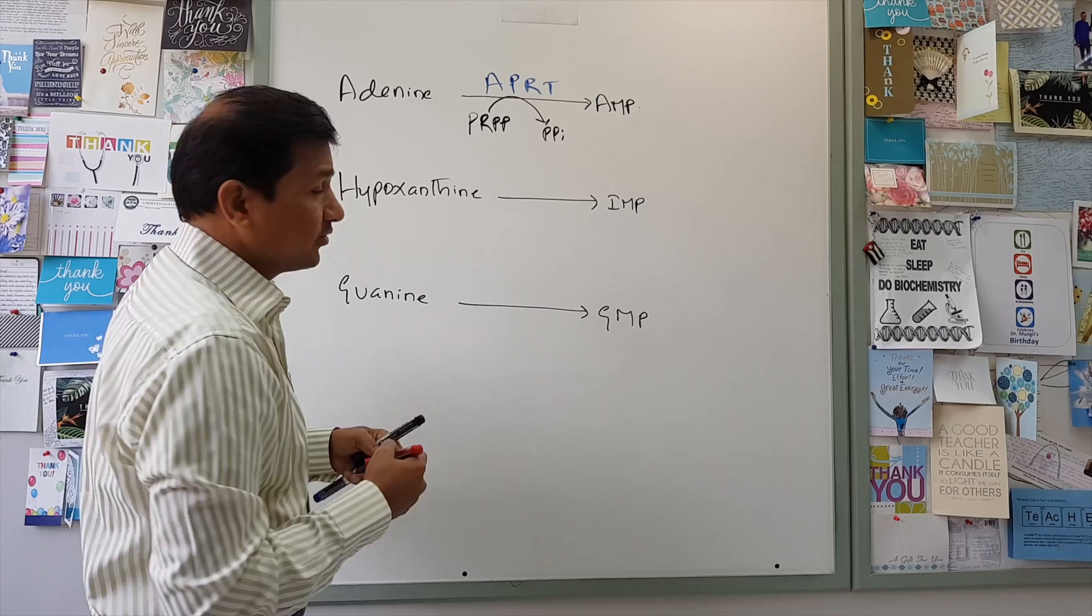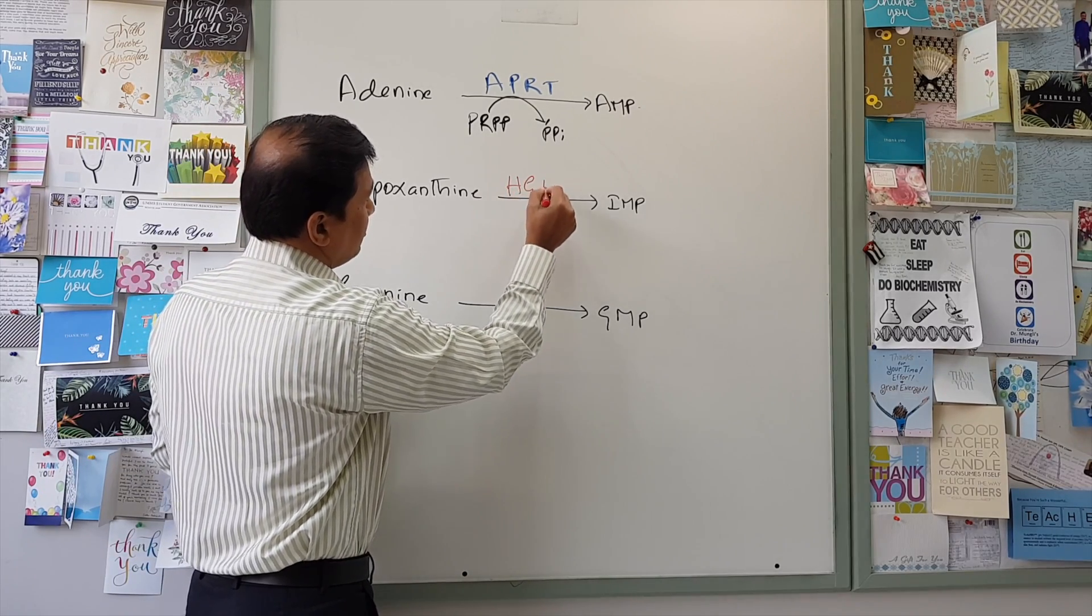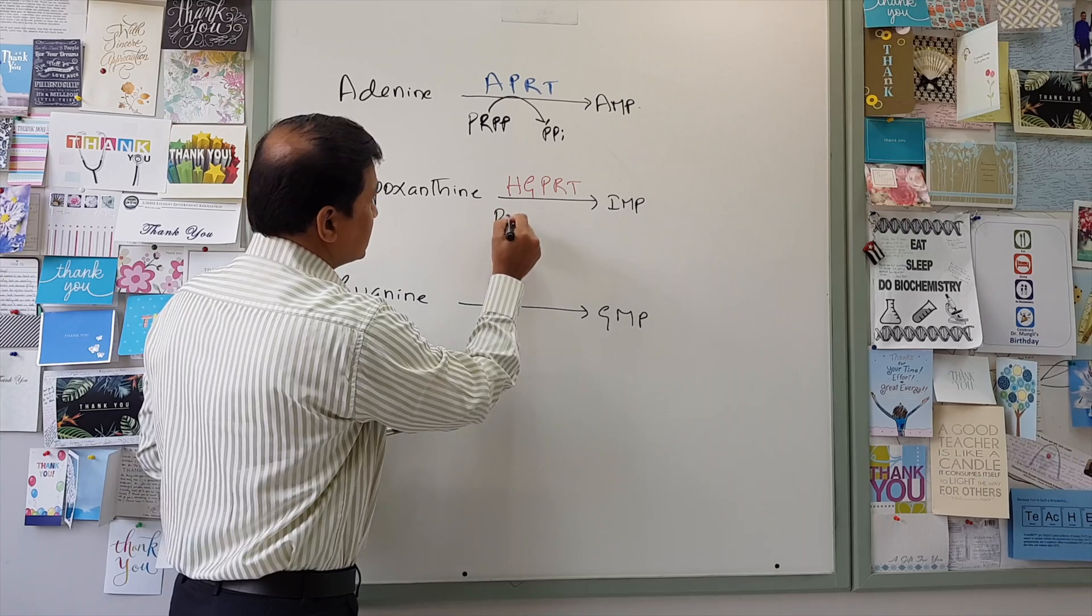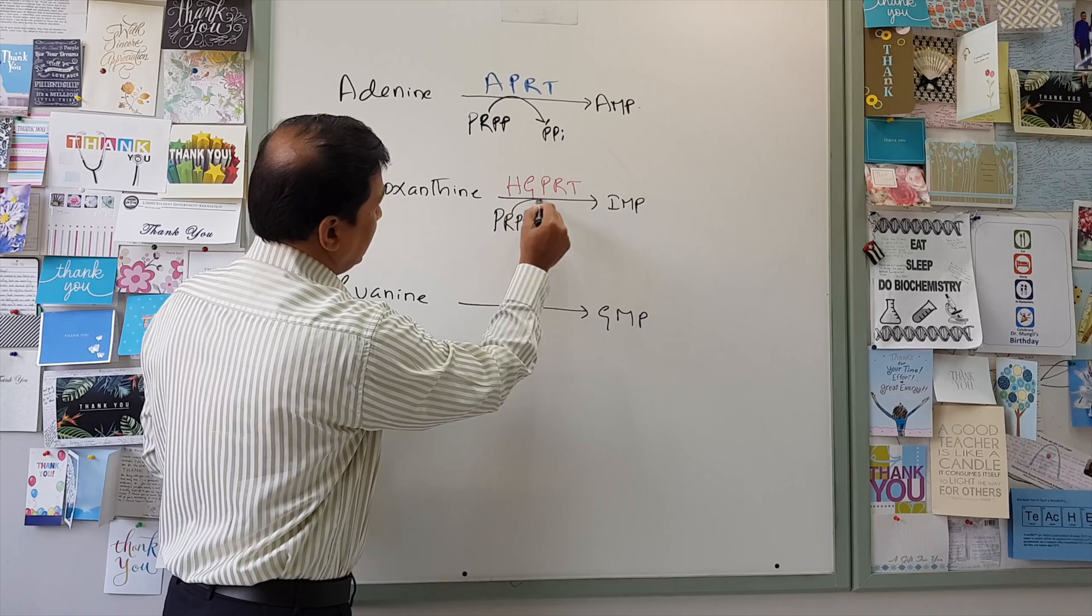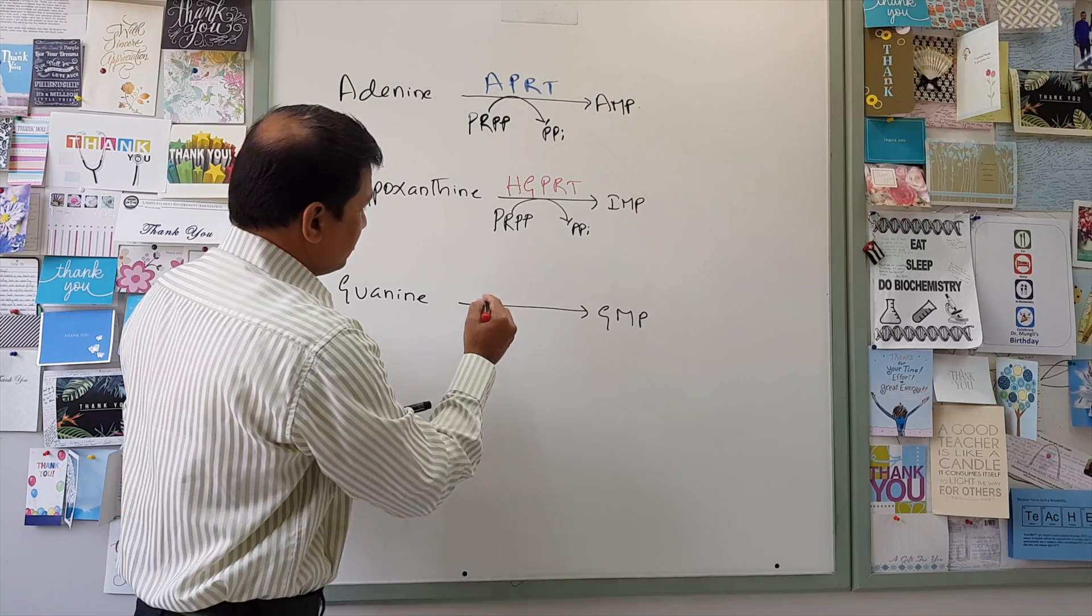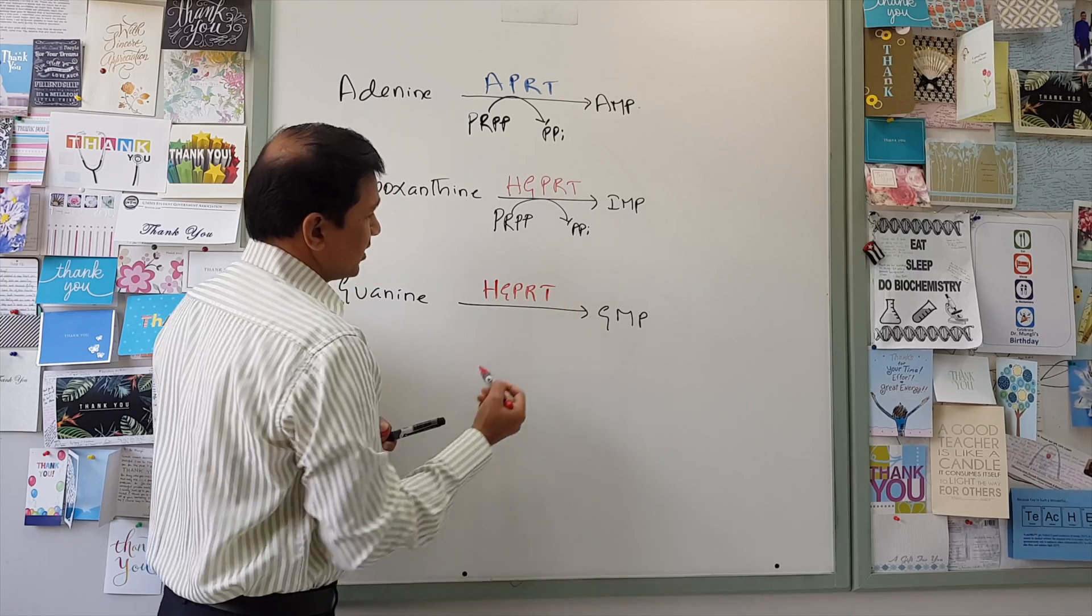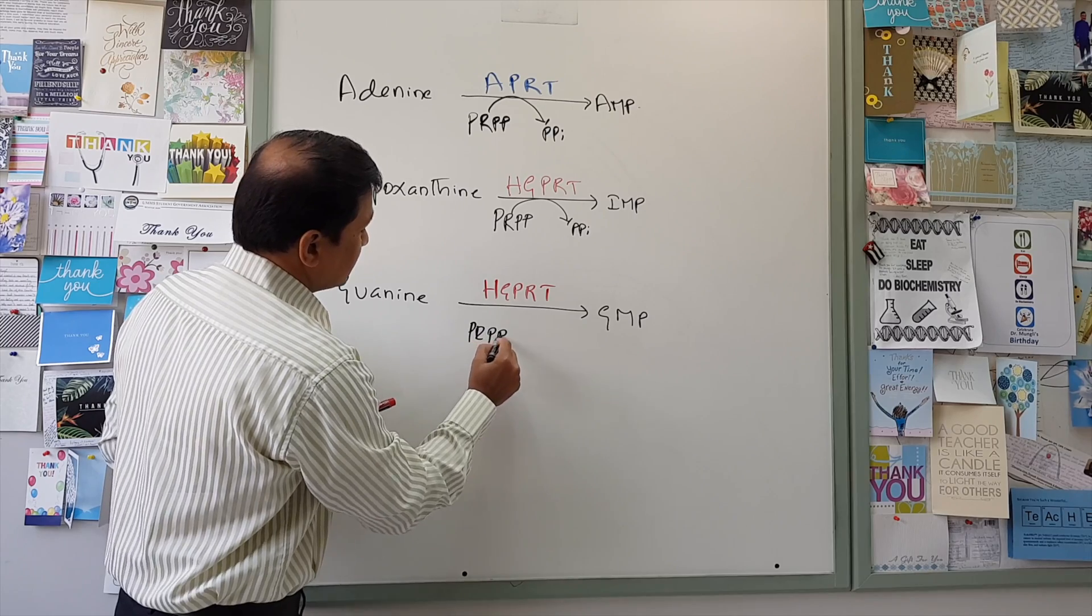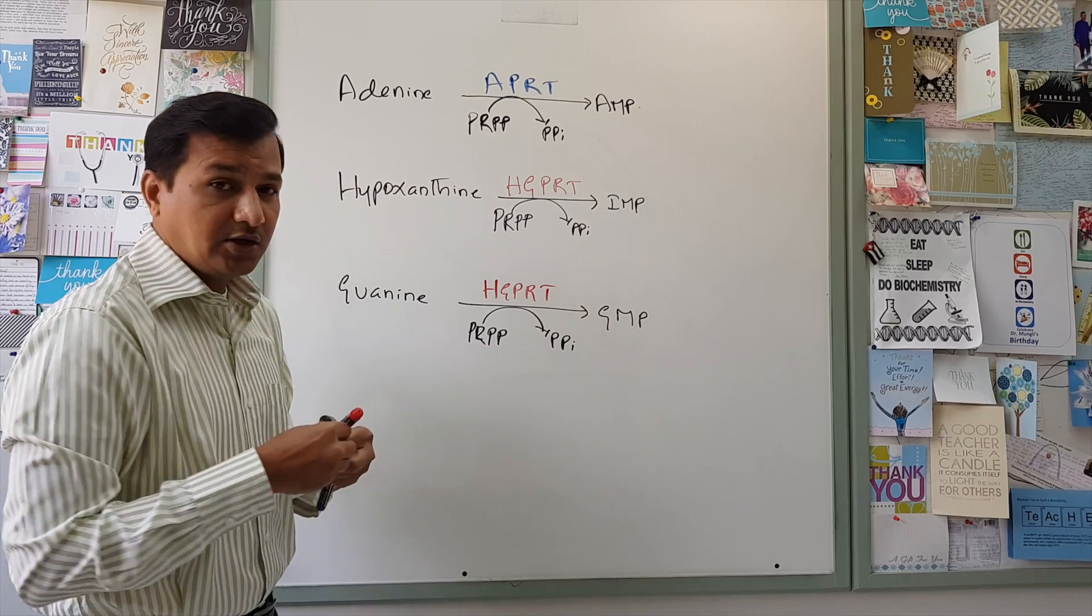So how the hypoxanthine and guanine are converted into IMP and GMP? That will be done by an enzyme called HGPRT enzyme, that is hypoxanthine-guanine-phosphoribosyl transferase, which is taking the ribose phosphate from PRPP again and releasing the PPi there. So the guanine is converted to guanosine monophosphate by the same enzyme HGPRT, hypoxanthine-guanine-phosphoribosyl transferase. You got to remember that name there and PRPP. PRPP gets into the reaction and PPi going out of the reaction and you made a nucleotide there.